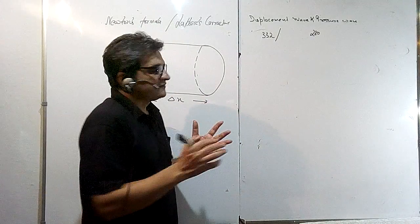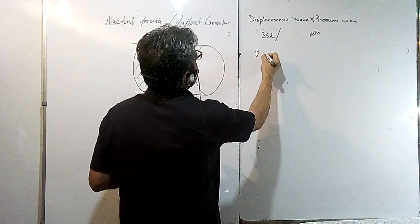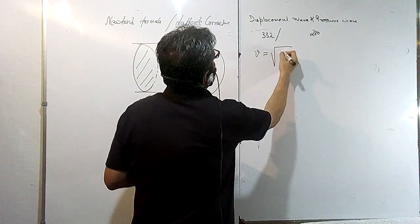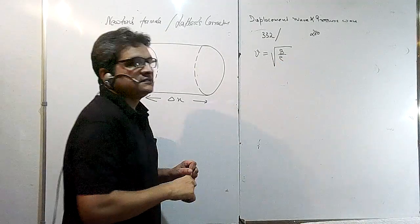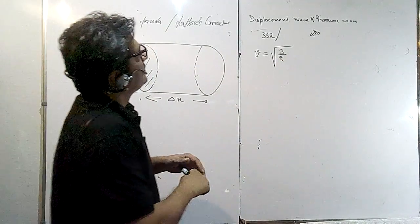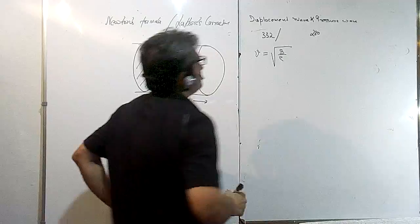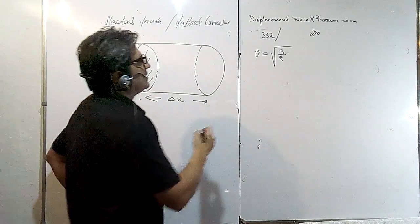We have derived in the previous lecture that the speed of sound wave can be written as B upon rho, where B is the bulk modulus of the medium in which the sound wave is traveling.